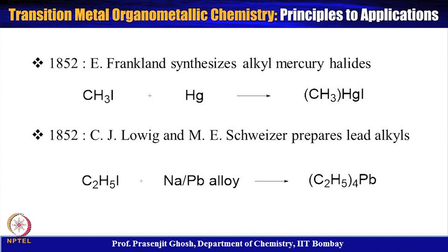In 1852, E. Frankland synthesized alkyl mercury halides. Again, a similar oxidative addition reaction occurred between methyl iodide and mercury, giving methyl mercury iodide. This was a period when many new organometallic compounds were being synthesized.